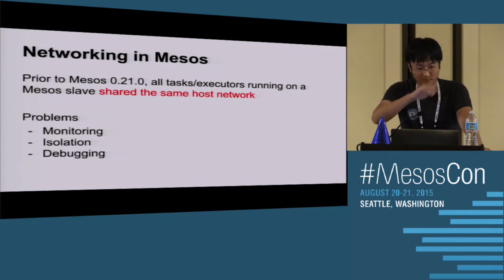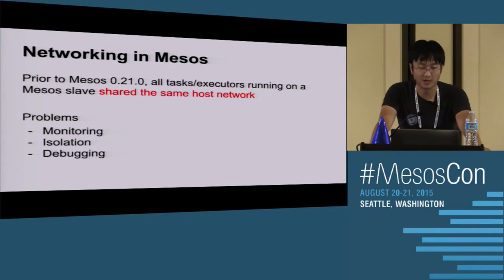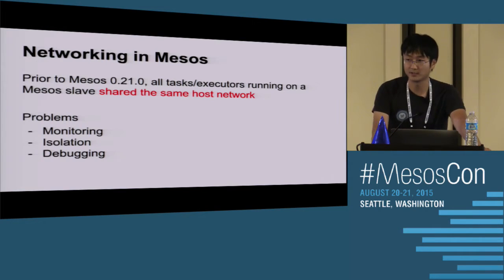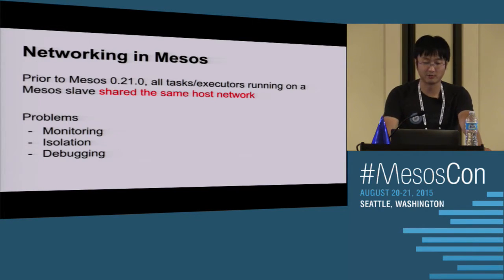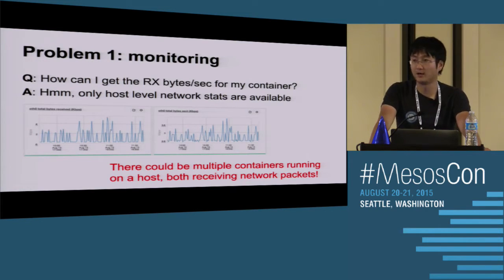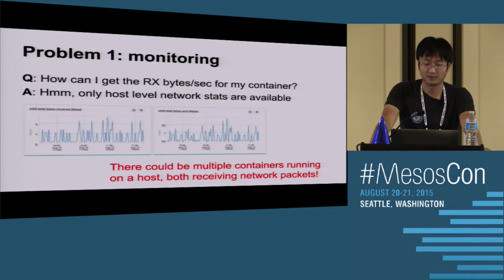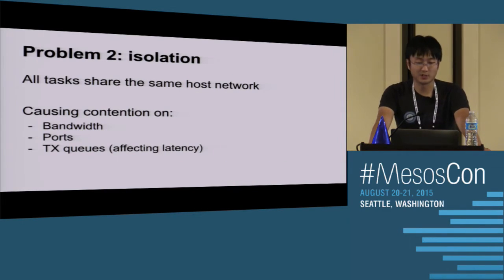The networking problem in MESOS: prior to 0.21, all tasks and executors running on a MESOS agent shared the same host network. That caused three problems. Problem number one is monitoring - we would get questions like 'how can I get the RX bytes per second for my container?' The answer was we could only get you host-level network statistics, but there could be multiple containers running on the host, so that statistic is not usually very useful.